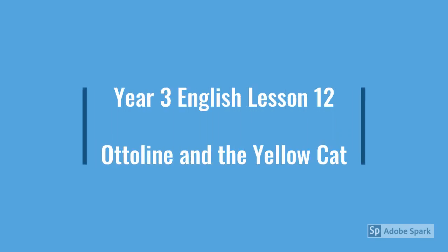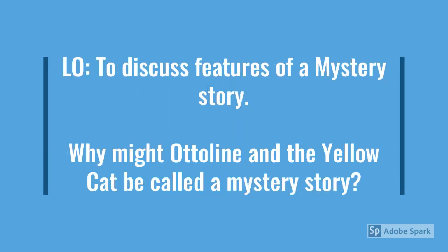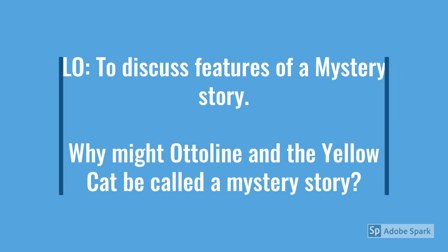Year 3, English Lesson 12: Otterline and the Yellow Cat. The objective today is to discuss the features of a mystery story. Take a few minutes to think about why Otterline and the Yellow Cat might be called a mystery story.